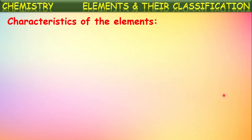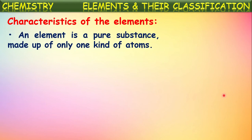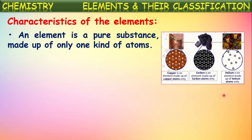Let us see the characteristics of elements. An element is a pure substance made up of only one kind of atoms — this is the major property. For example, copper contains only copper atoms, carbon in coal or diamond contains only carbon atoms, and helium gas contains only helium atoms. The substance made up of only one kind of atoms is known as an element.